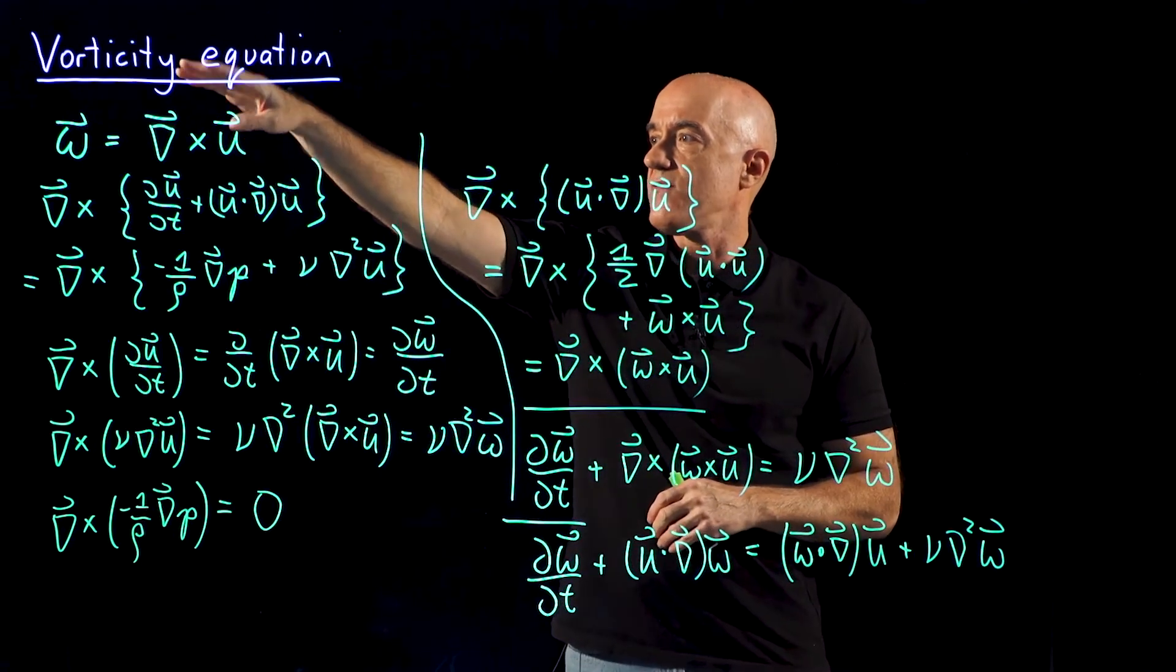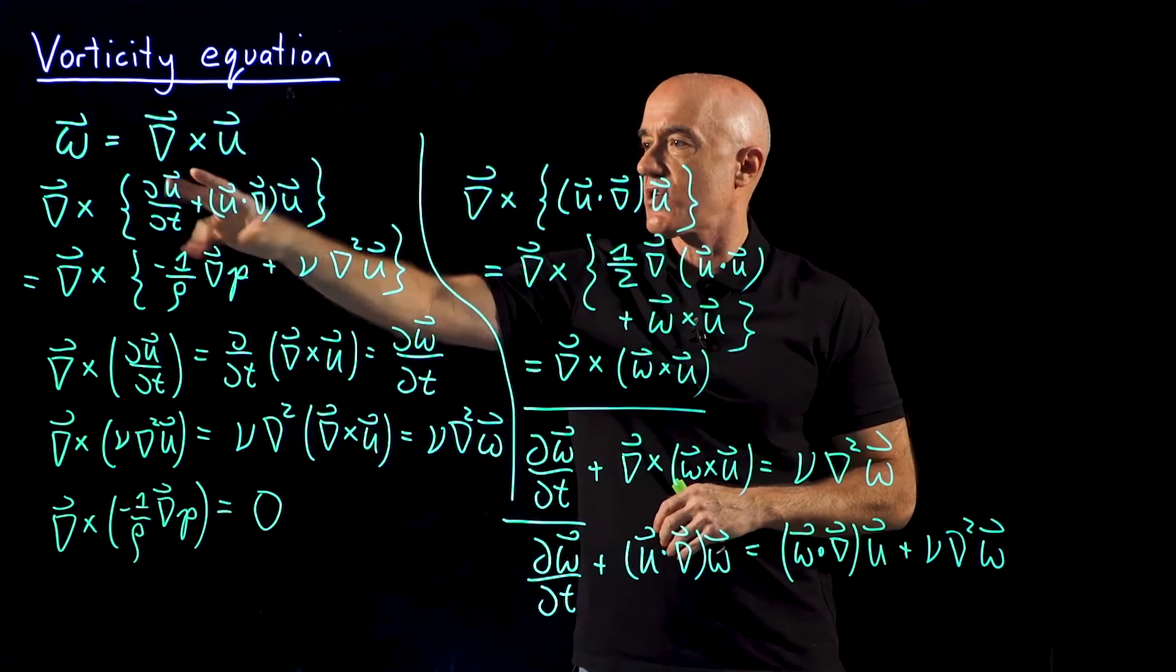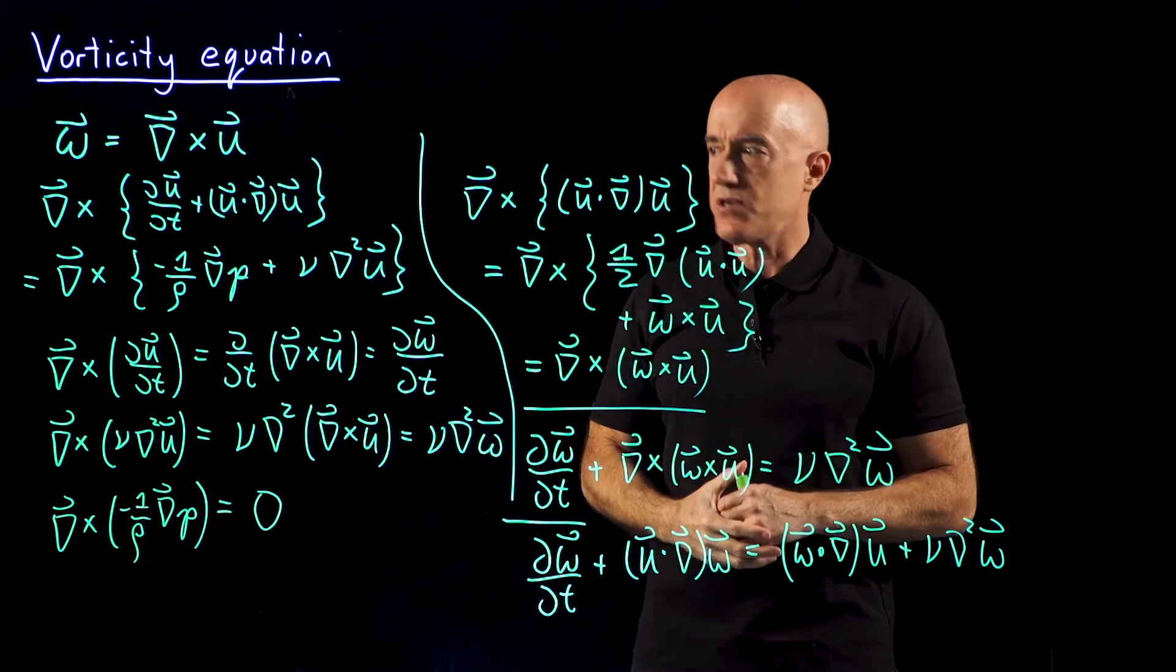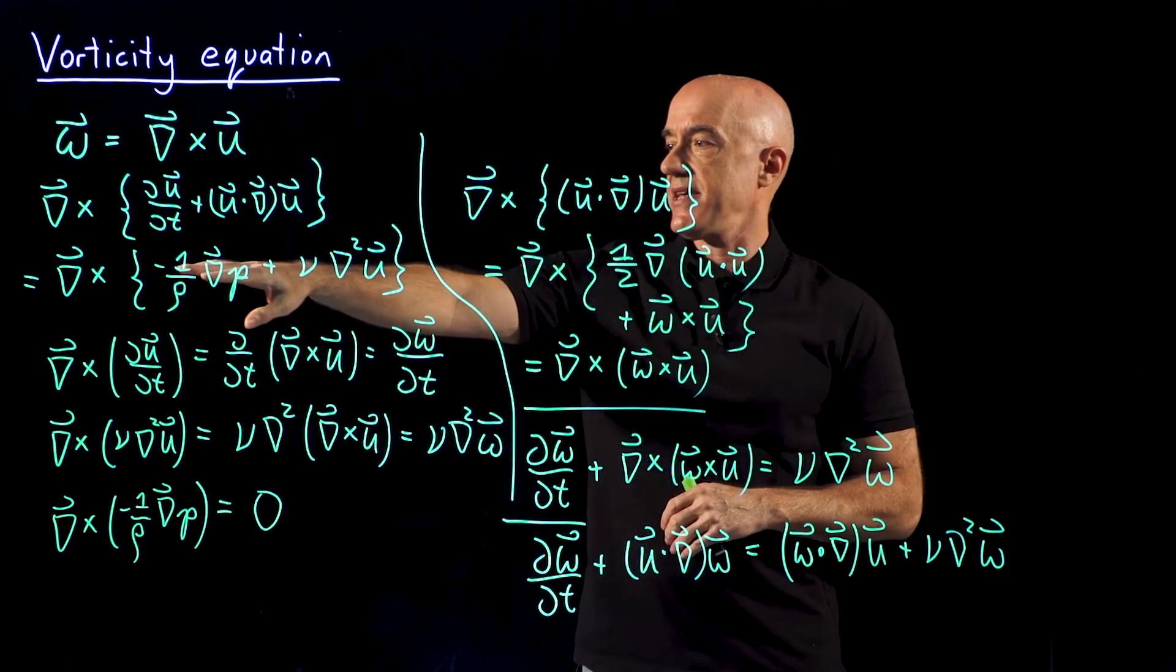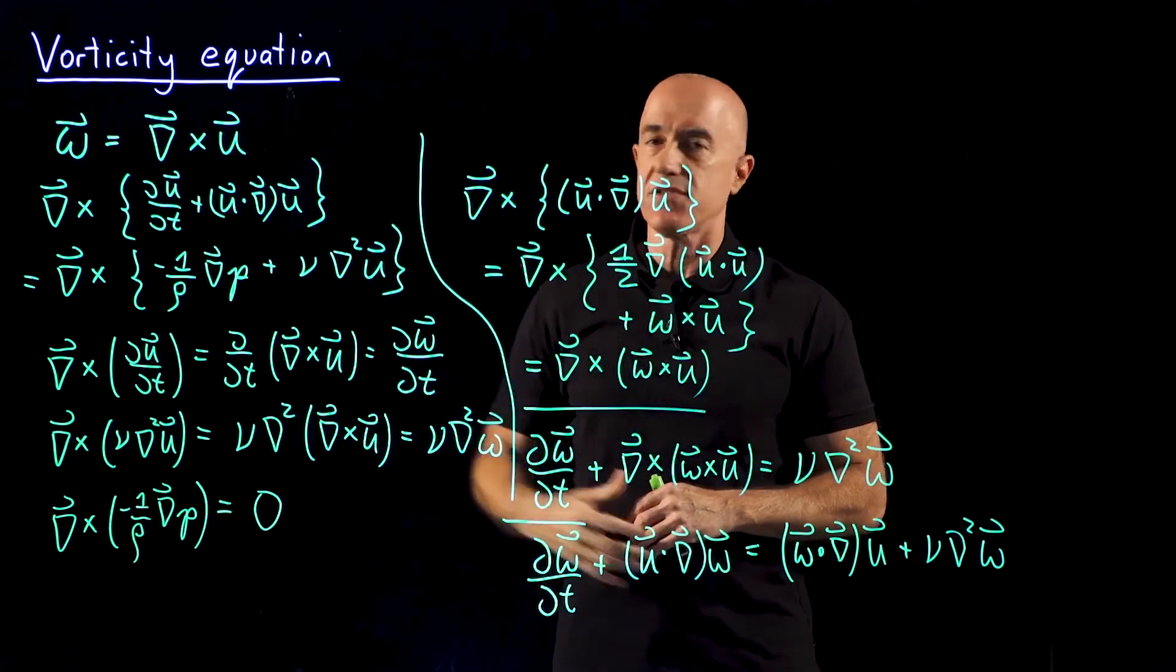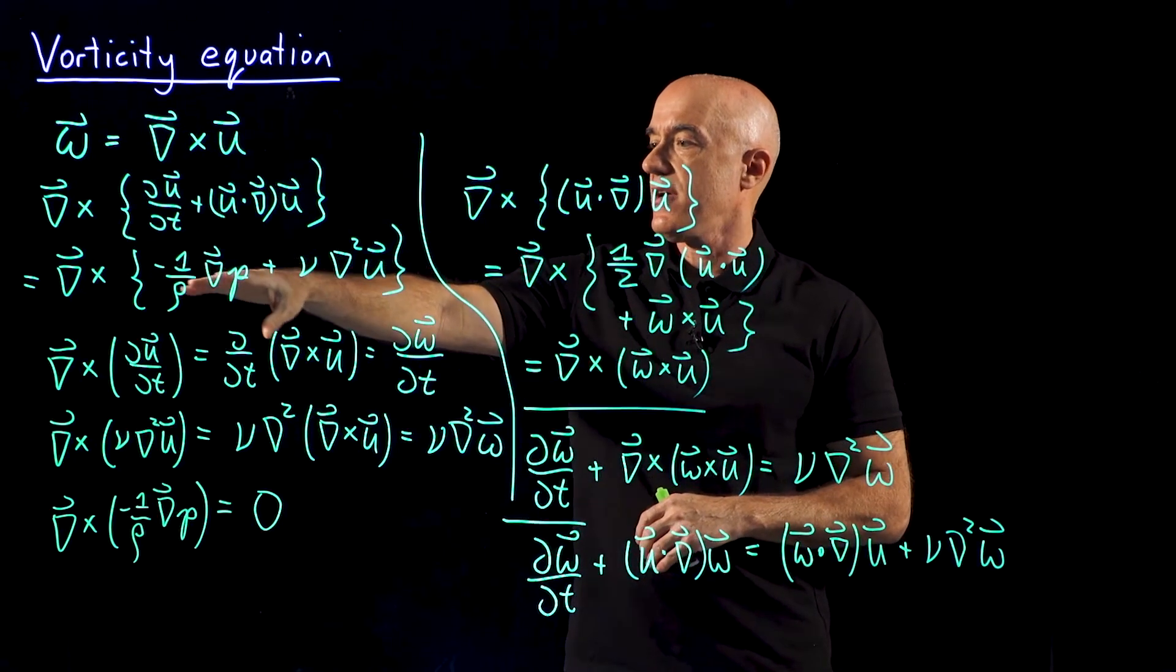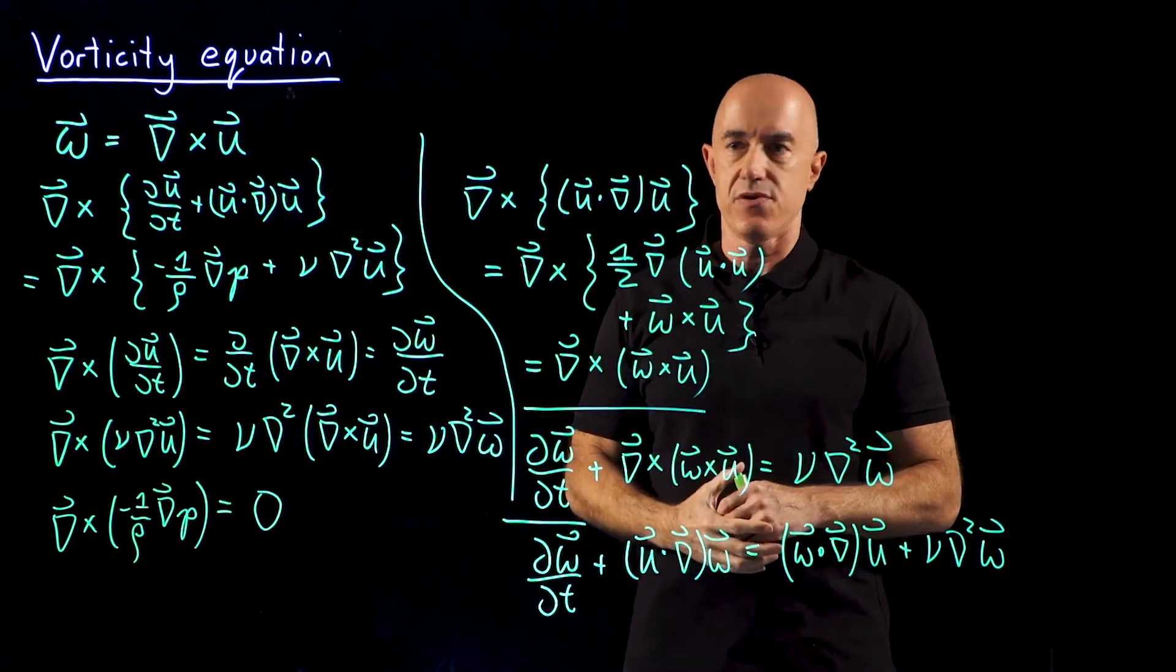We derive the vorticity equation by taking the curl of the Navier-Stokes equations. The nice thing about taking the curl of the Navier-Stokes equation is that the curl of the gradient of the pressure is zero.